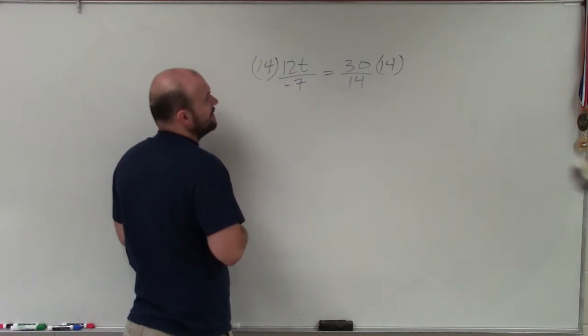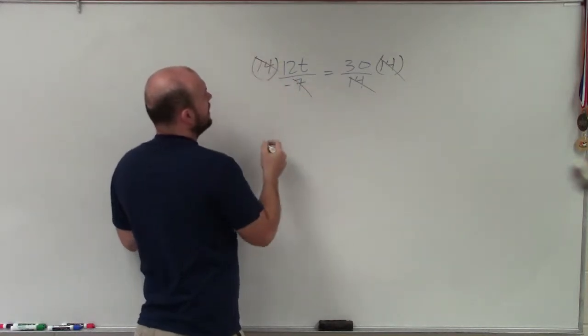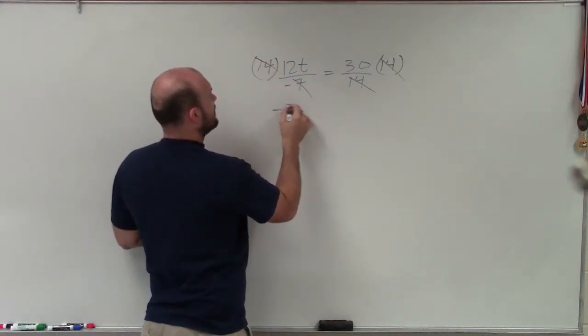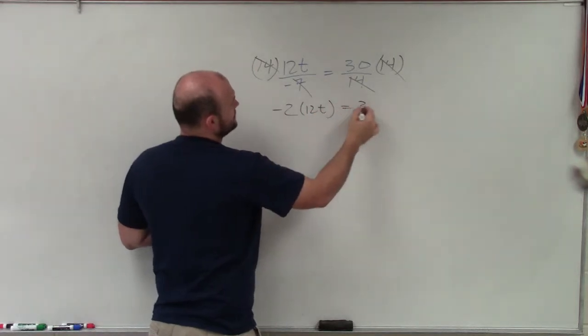When I go ahead and do that here, 14 divides out here, and I'm left with negative 2 times 12t equals 30.